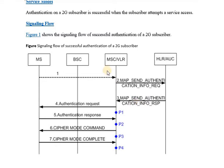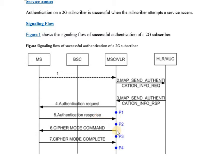The HLR responds back with the authentication info response messages and creates certain parameters used by the MSC/VLR in authenticating the mobile station. The MSC then sends an authentication request message to the mobile station based on the parameters received from the HLR, and the handset responds back with the authentication response message.